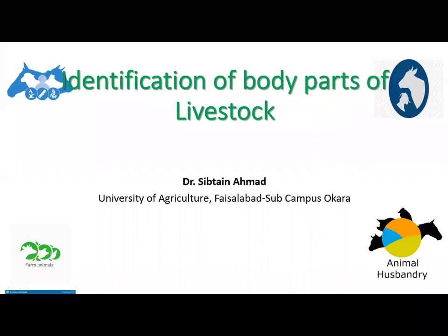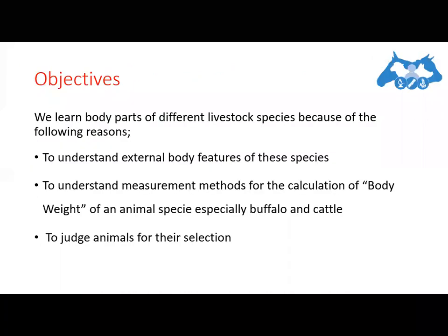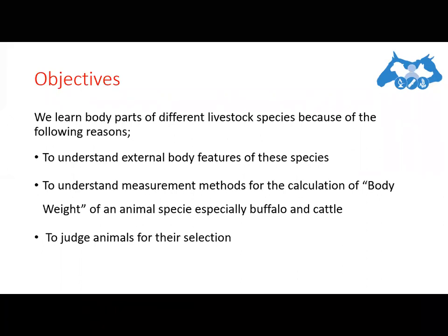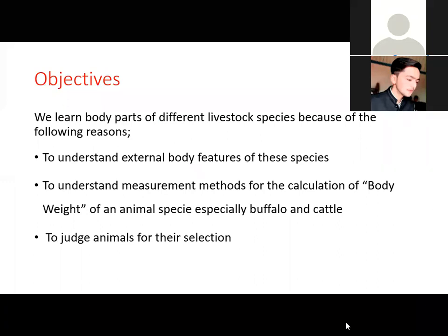Cattle, buffalo, and sheep are especially of interest in livestock management. Other animals like draft animals — for example donkey, horse, mules, and even camels — also provide us milk. So all these animals are of interest for us in livestock management, and identification of their body parts across different species is very important.